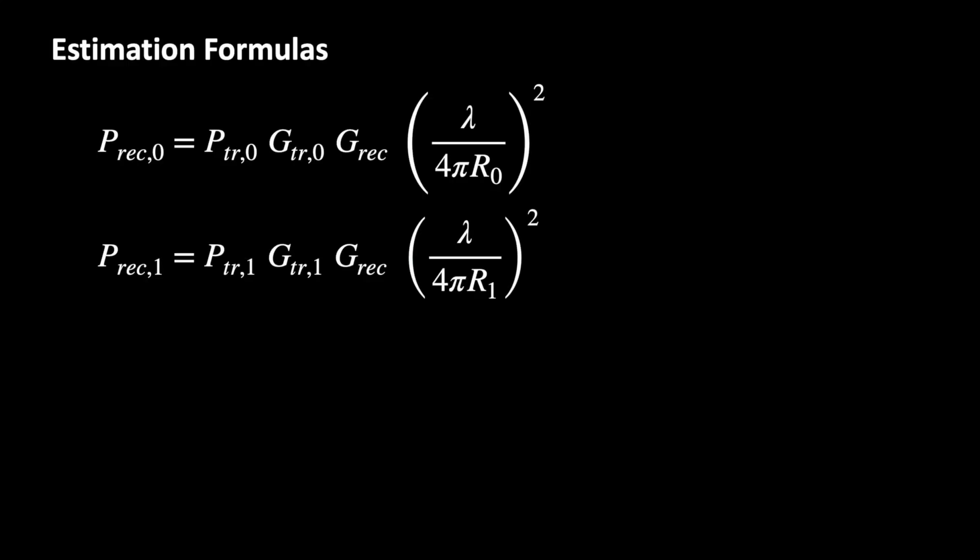Using the Friis equation, we are calculating the received power of both signals depending on the transmission power P, the antenna gains G, the wavelength lambda, and the distance R. The resulting condition can be applied to an arbitrary scenario.